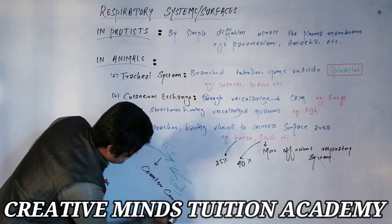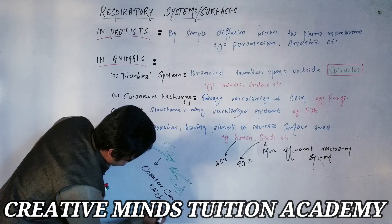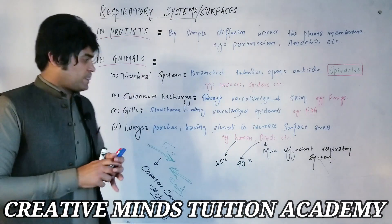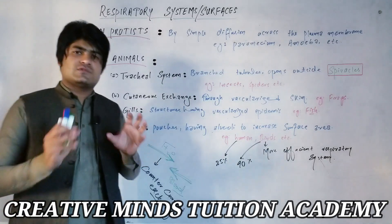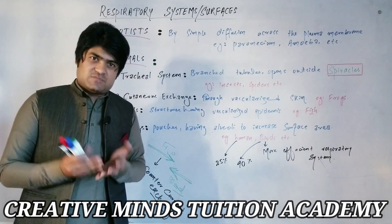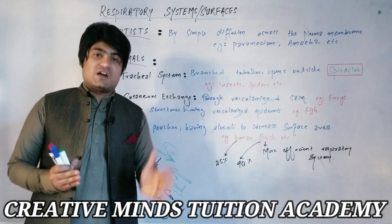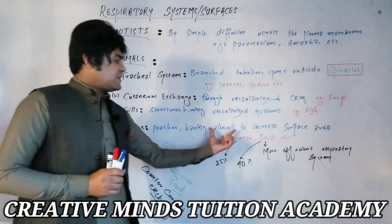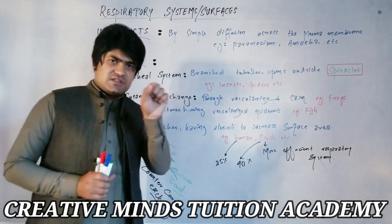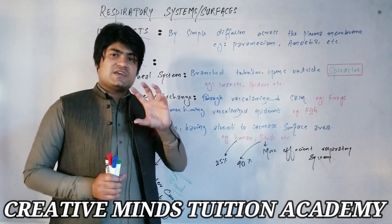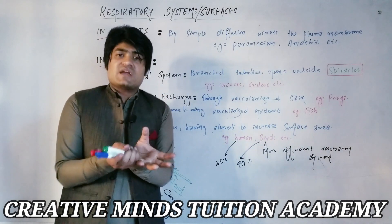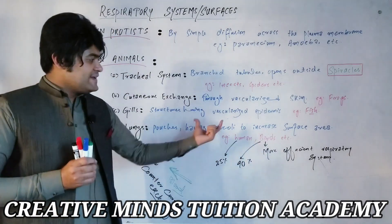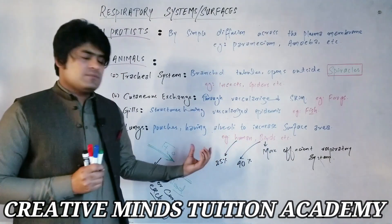Next are the lungs. Lungs are a terrestrial adaptation. The lungs are a pouch-like structure, and the alveoli are bunch-like structures that increase surface area for gaseous exchange. This system is found in mammals and humans.